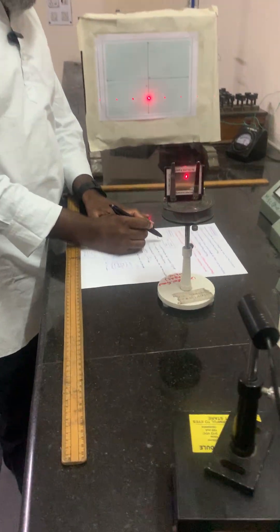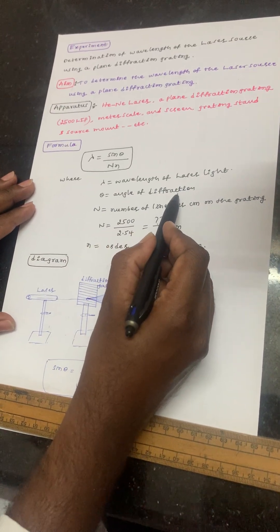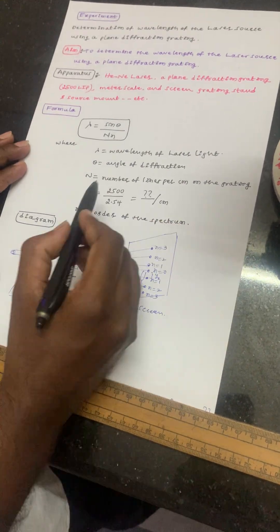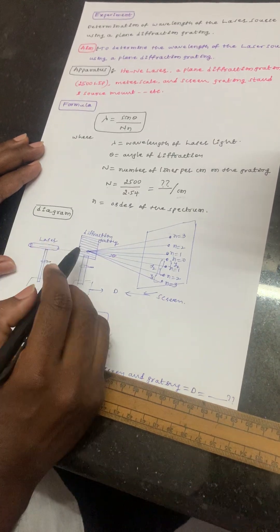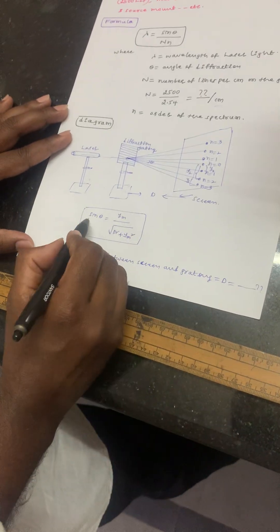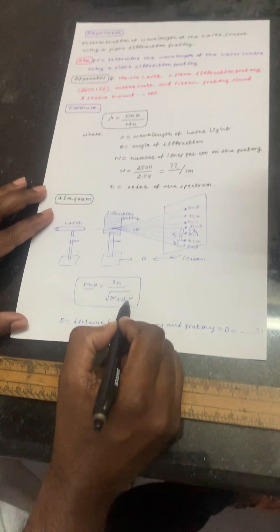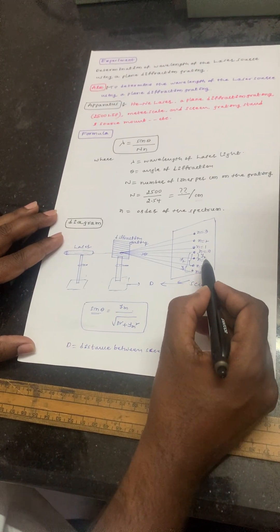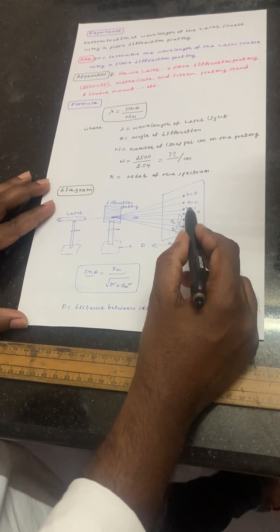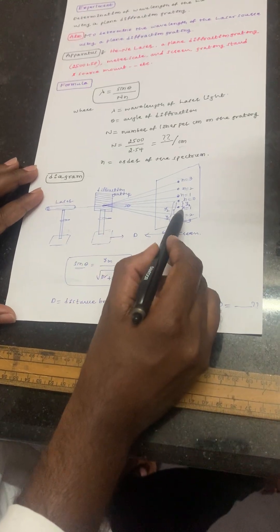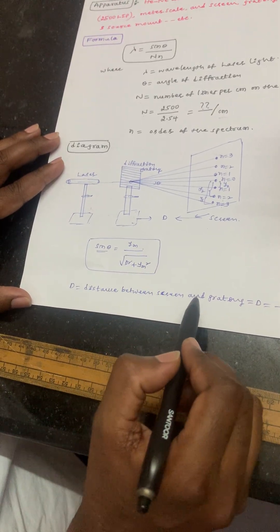First, see the formula. Wavelength λ = sinθ / (n × N), where n is the order of the spectrum, θ is the angle of diffraction, and capital N is the number of lines per centimetre on the grating. N = 2500 / 2.54 lines per centimetre. sinθ = ym / √(d² + ym²), where d is the distance between the screen and grating.